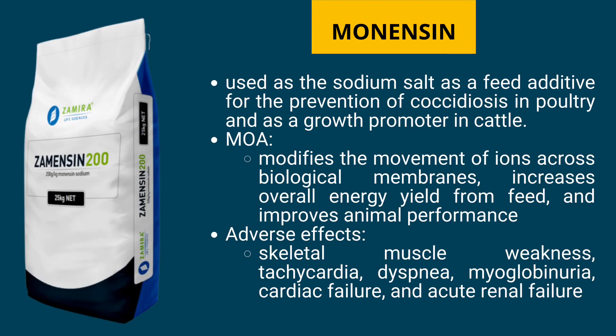Monensin is used as the sodium salt as a feed additive for prevention of coccidiosis in poultry and as a growth promoter in cattle. Its mode of action modifies the movement of ions across biological membranes, increases overall energy yield from feed, and improves animal performance. Adverse effects include skeletal muscle weakness, tachycardia, dyspnea, myoglobinuria, cardiac failure, and acute renal failure.